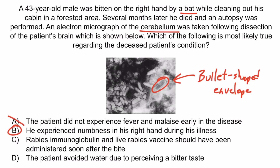Choice A is wrong because patients do experience fever and malaise earlier in their illness. Choice C is wrong because patients should receive a killed vaccine, not a live one — otherwise this choice would have been true. Choice D is wrong because patients experience hydrophobia due to painful pharyngeal spasms, not a bitter taste. And that's all you need to know about the rabies virus.